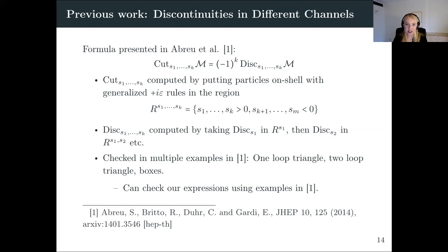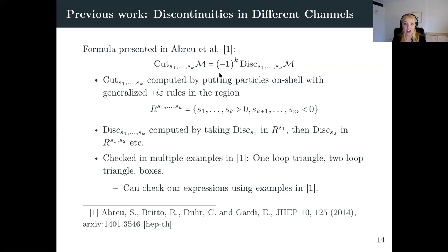Let me talk about previous work. In a 2014 paper by Abreu, Brito, Duhr, and Guardi, they presented a formula relating multiple cuts of an amplitude to its discontinuities, computed in the kinematic region where all the cuts can be performed, and derived generalized I-epsilon rules to compute those cuts. They computed discontinuities by taking the first discontinuity in region R_{S1} then analytically continuing to take the second in R_{S1,S2} etc. We can use many of their examples — the one-loop triangle, two-loop triangle, and some boxes — to also check our equations.